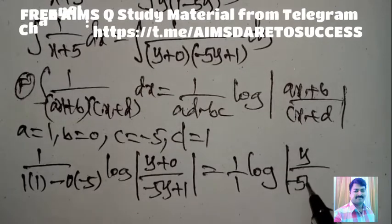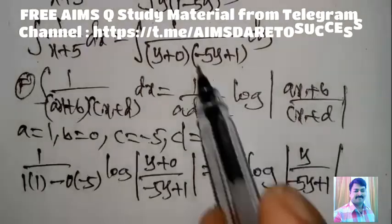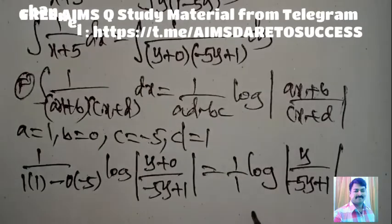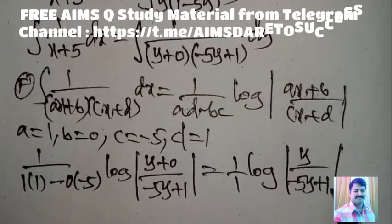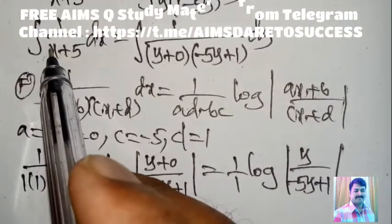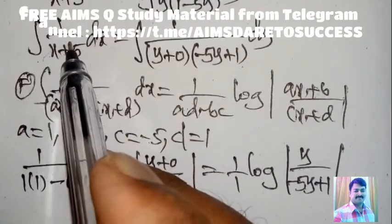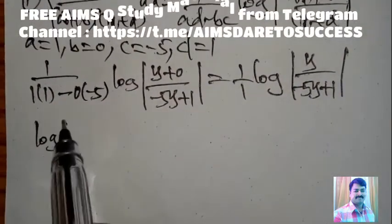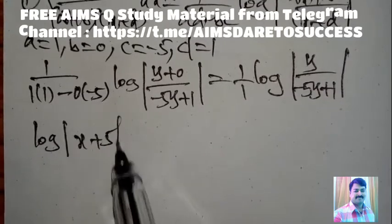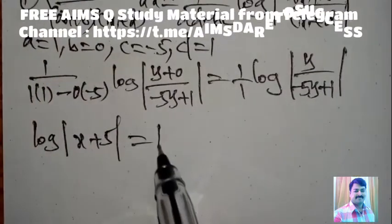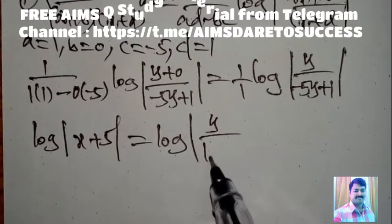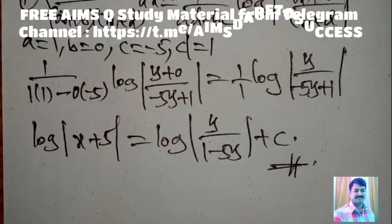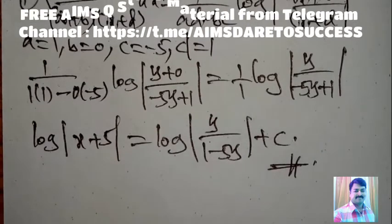So in place of the integral of 1/[(y)(−5y + 1)] dy, we write log|y/(1 − 5y)|. The left side gives log|x + 5|. Therefore the final answer is: log|x + 5| = log|y/(1 − 5y)| + C. Very easy answer — listen carefully, learn carefully, success will come automatically.